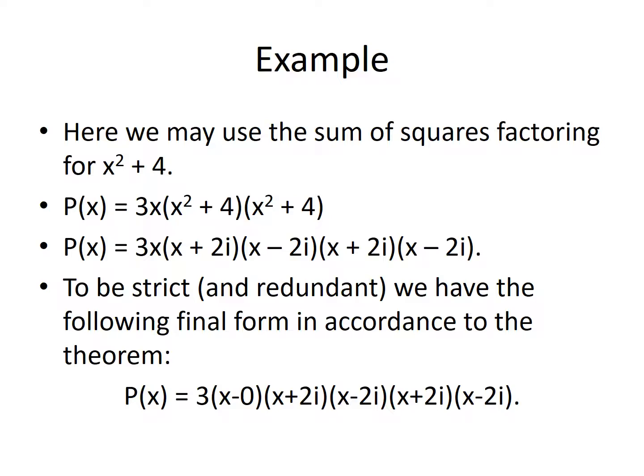To be strict and precise in accordance with the theorem, the final form is 3 times the quantity x minus 0, times x plus 2i, times x minus 2i, times x plus 2i, times x minus 2i. This specifically states that 0 is a solution to this polynomial. While writing x minus 0 is redundant since adding and subtracting 0 does not change a value, and normally we would write repeated factors with exponents, we are following the guidelines of the theorem and writing everything out accordingly.